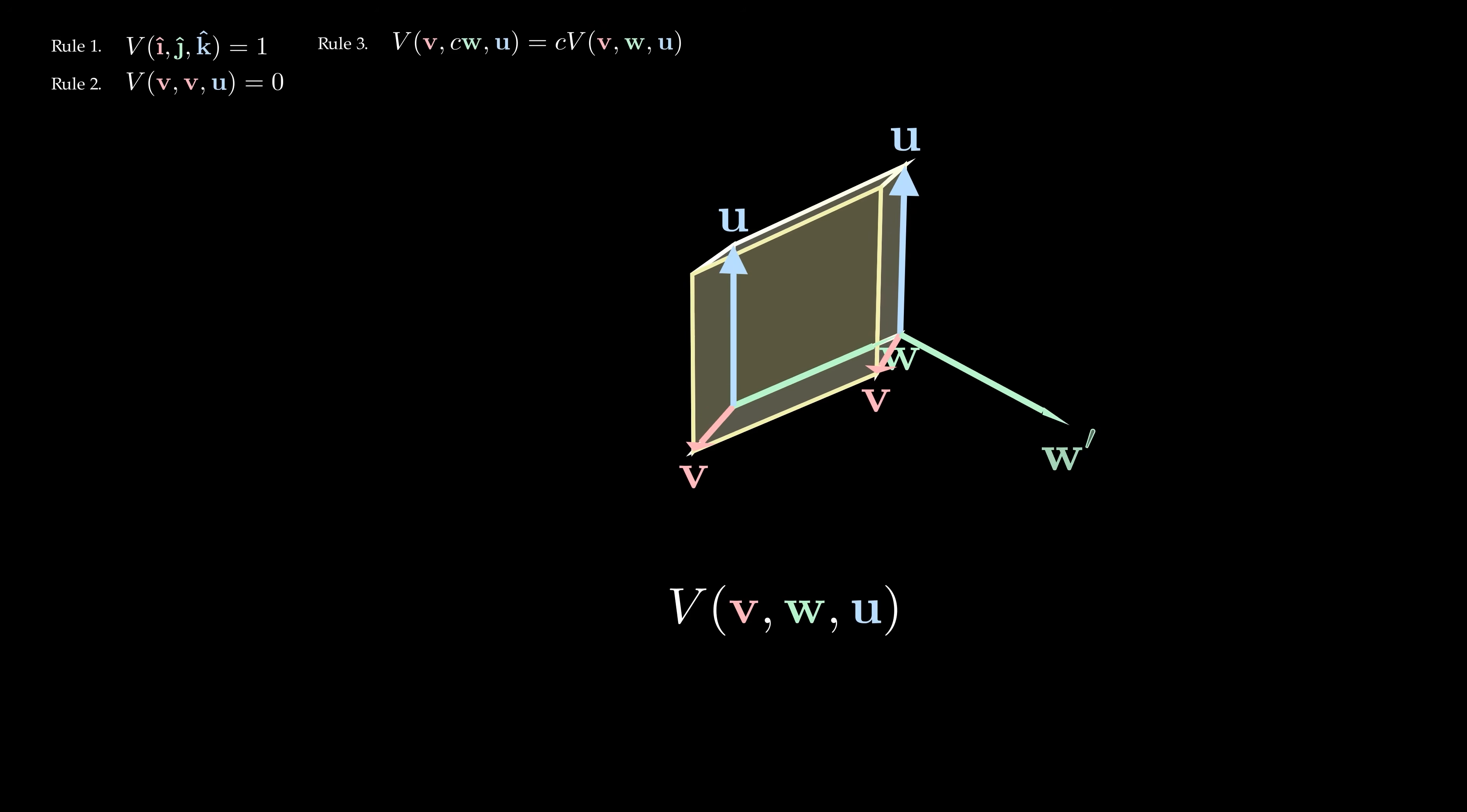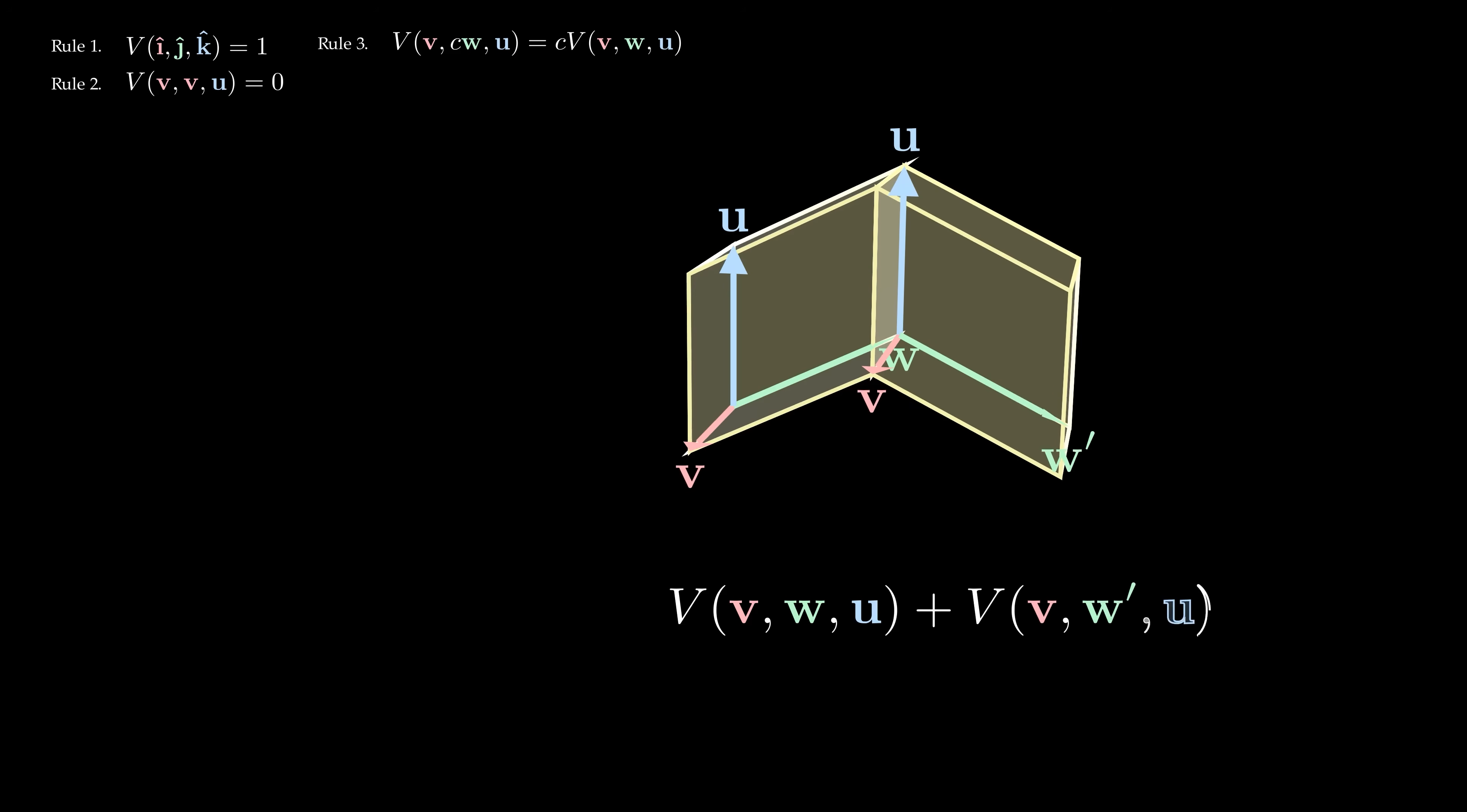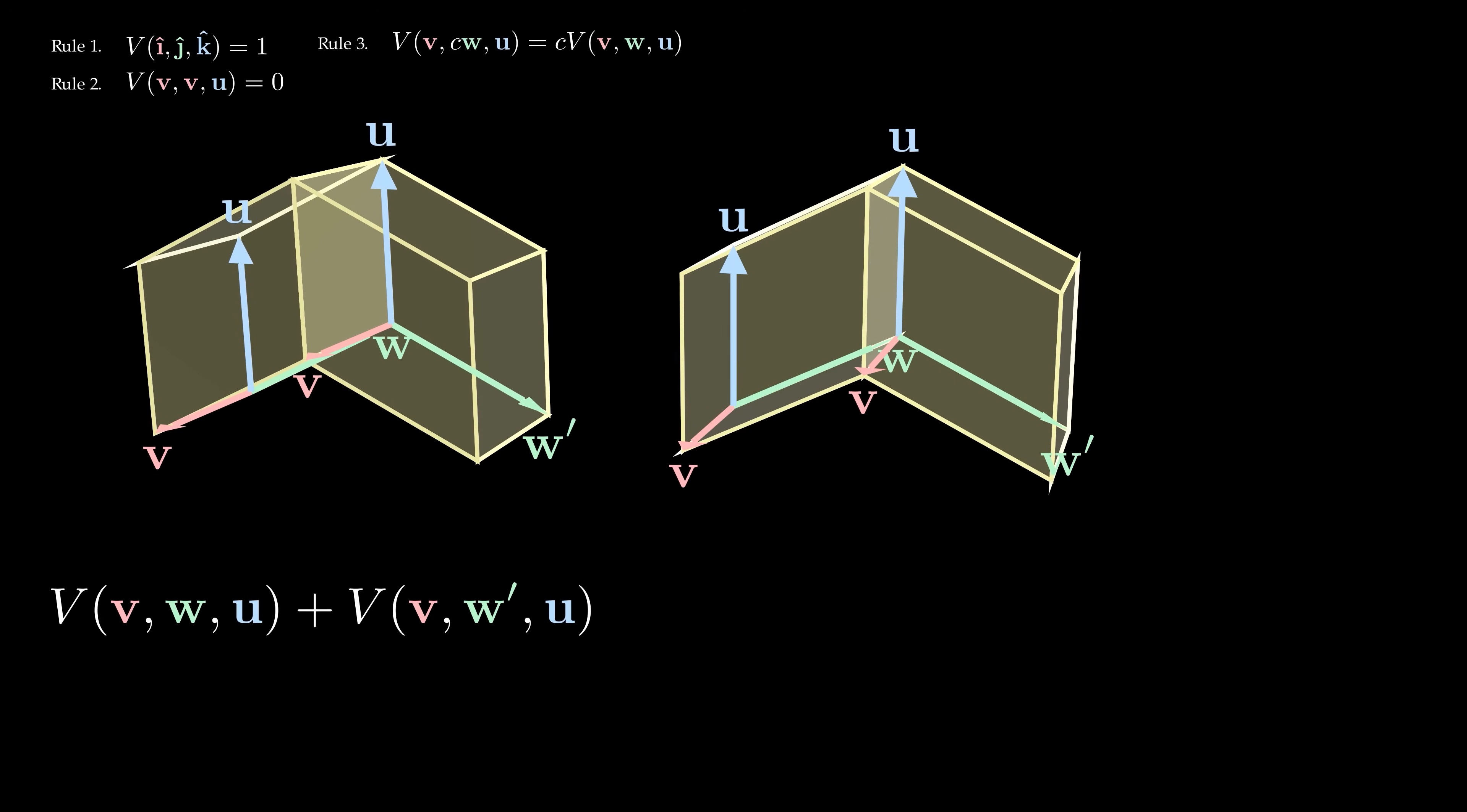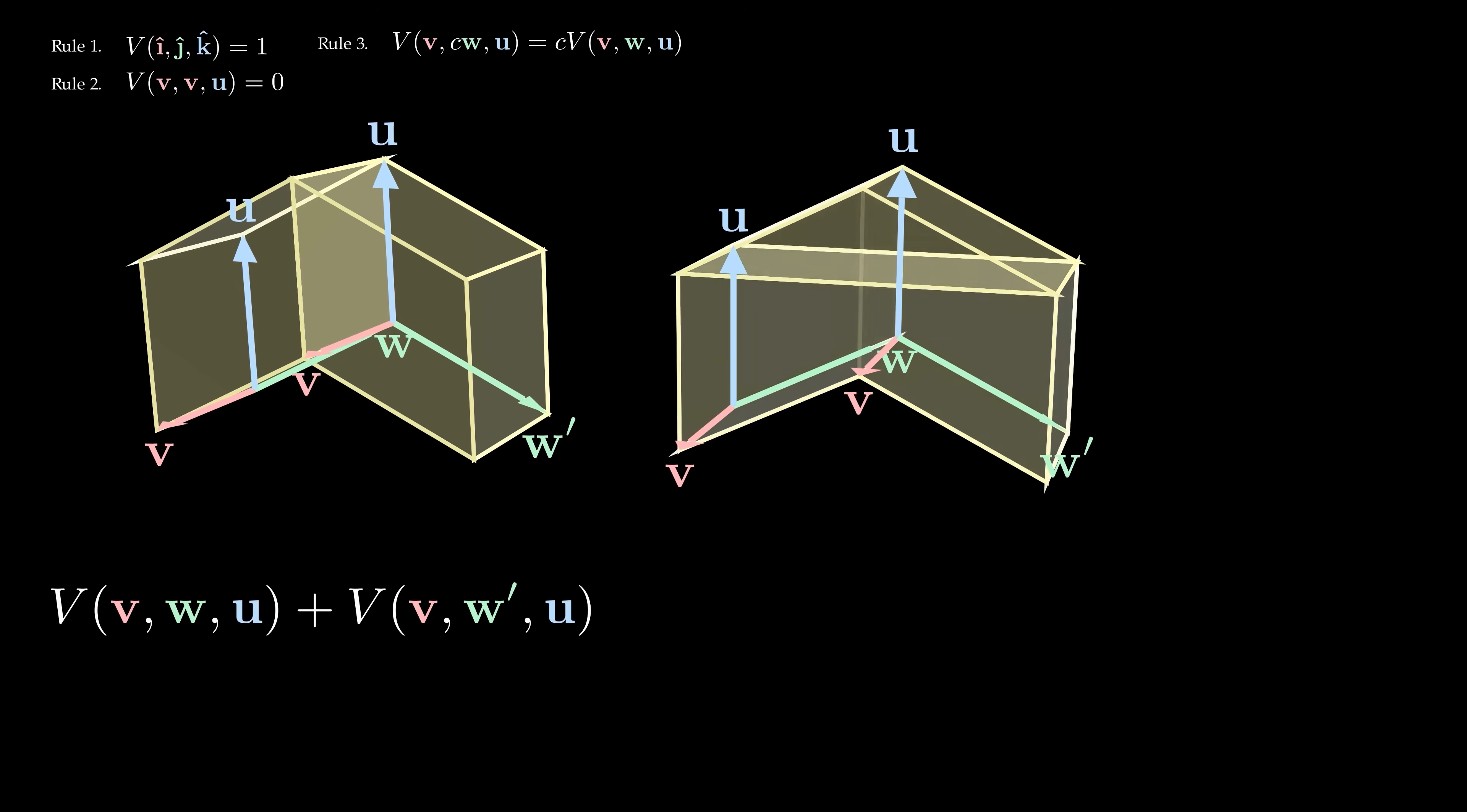Adding vectors works the same way as before, except now, instead of shifting a triangle, we shift a triangular prism, which is something like a thick triangle.